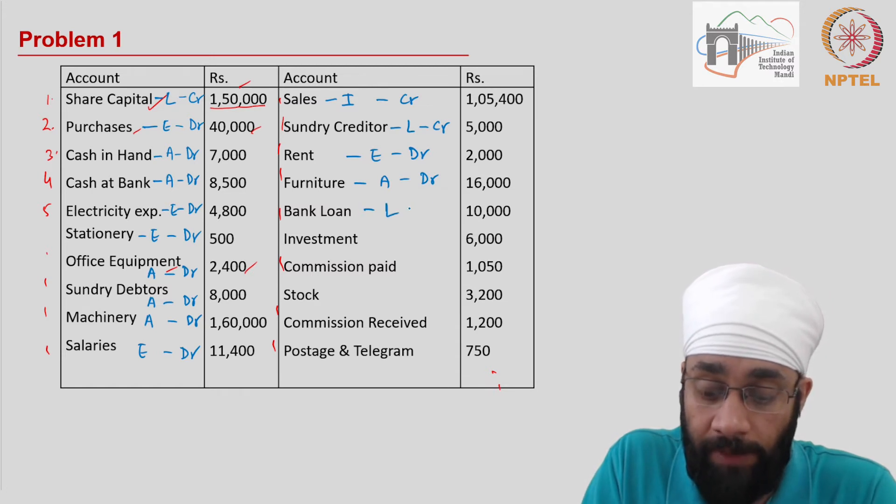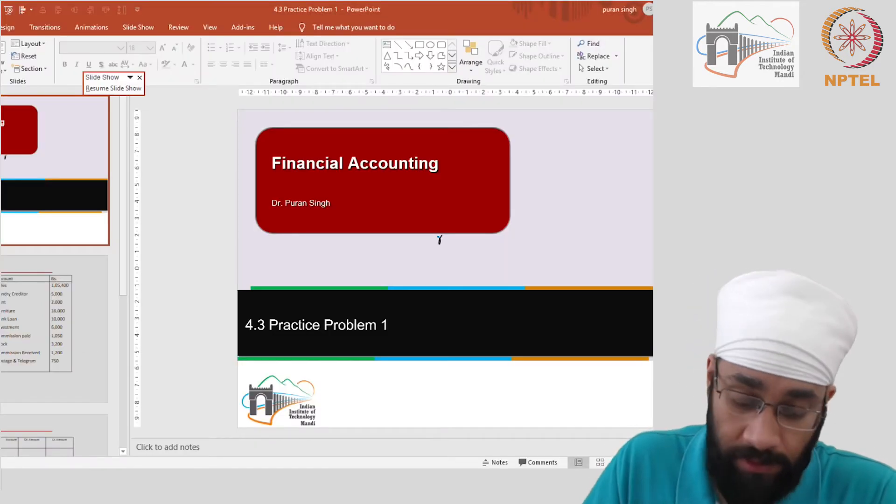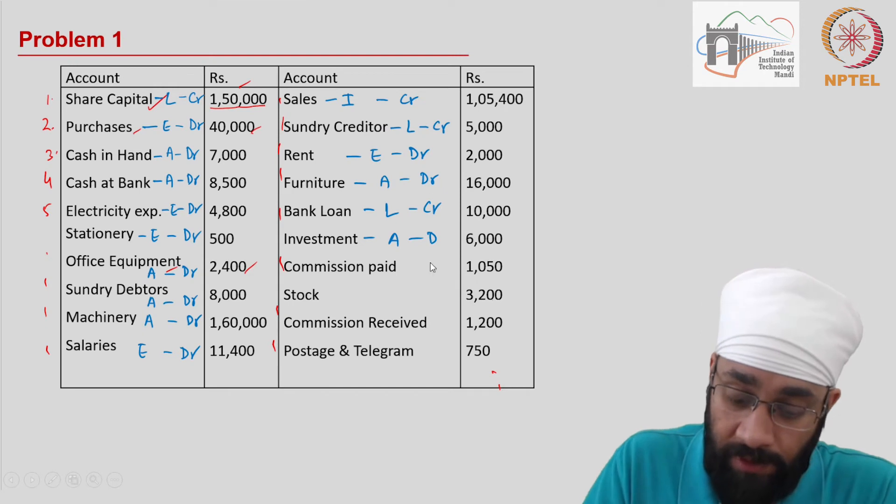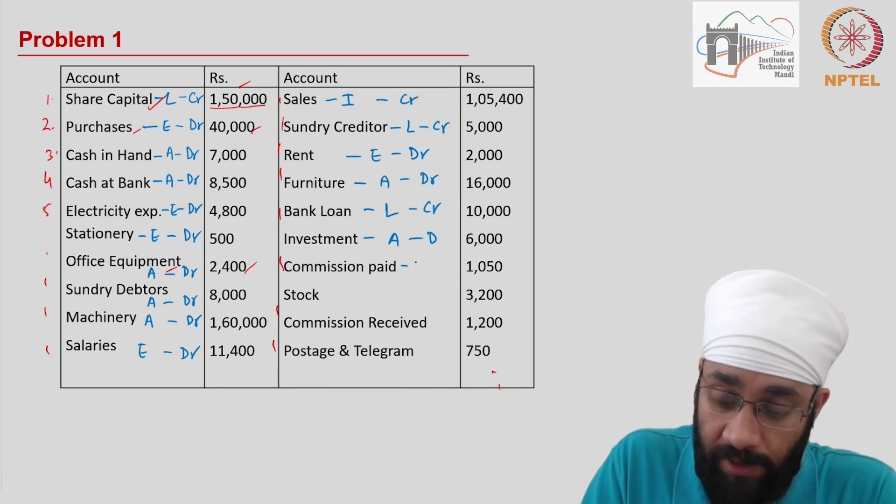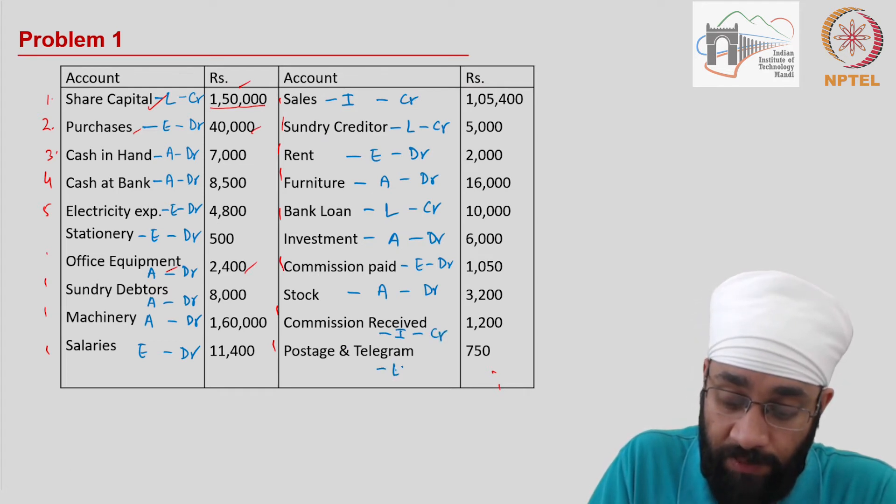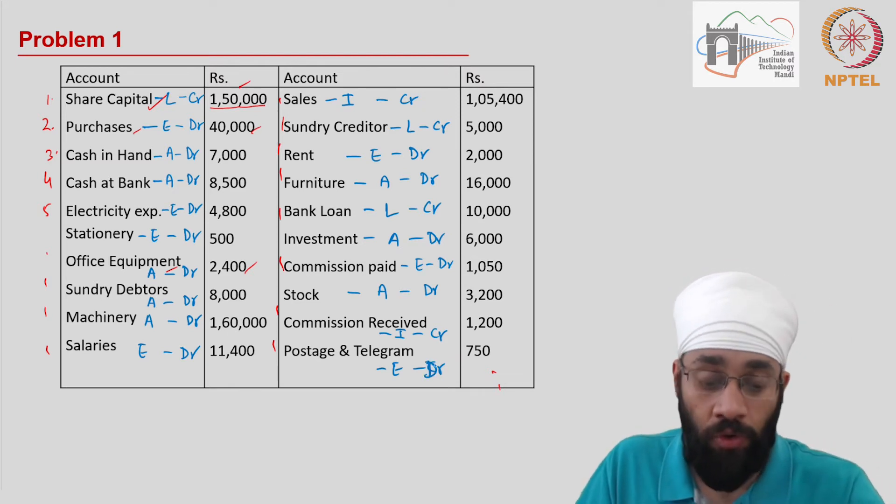Rent is an expense, debit balance. Furniture is an asset, debit balance. Bank loan is liability, credit balance. Investment is an asset, debit balance. Commission paid is an expense, debit balance. Stock is an asset, hence debit balance. Commission received is income, therefore credit. Postage and telegram is expense, hence debit balance.